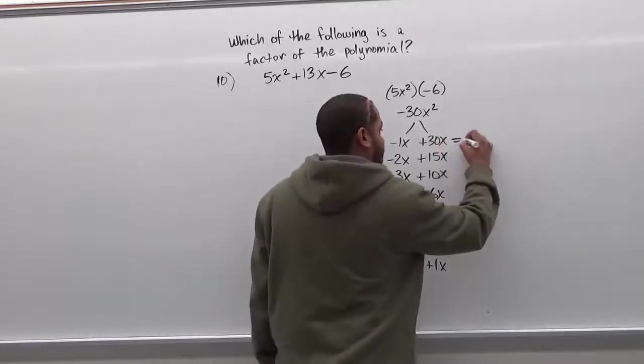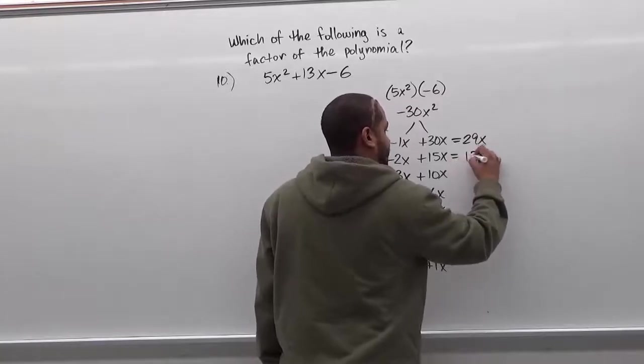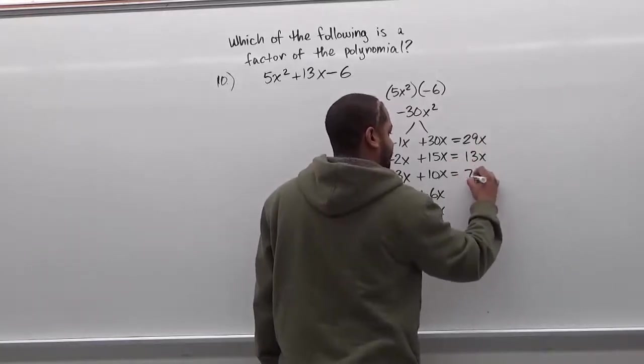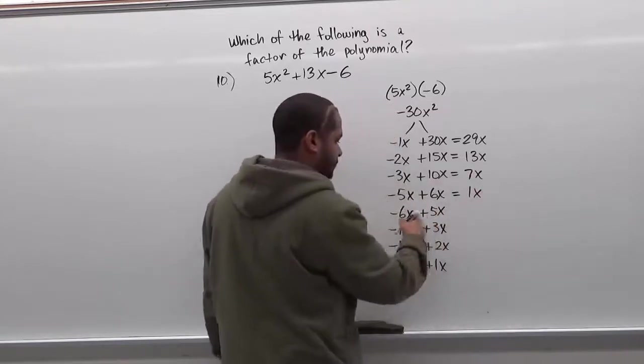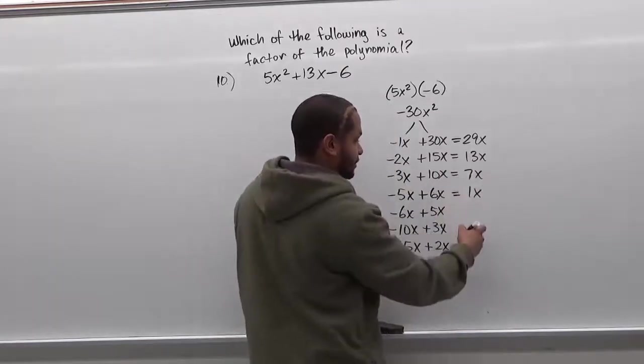So here we have 29x, here we have 13x, here we have 7x, here we have 1x, and where the numbers switch we're going to notice the signs are going to change on this list.